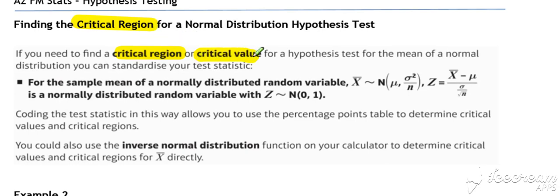If we can find the critical value, then the critical region will be the wrong side of that critical value.